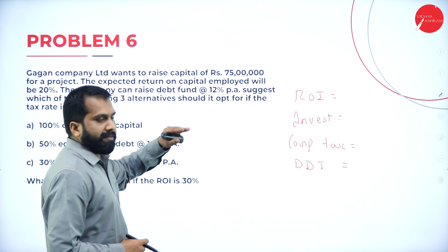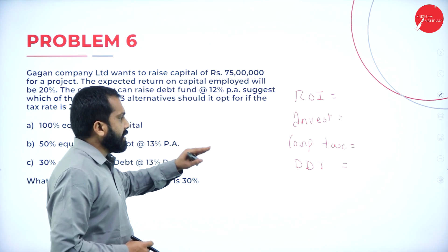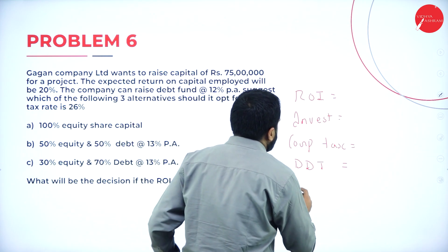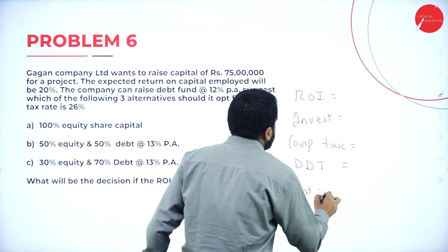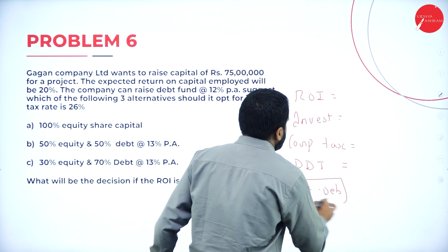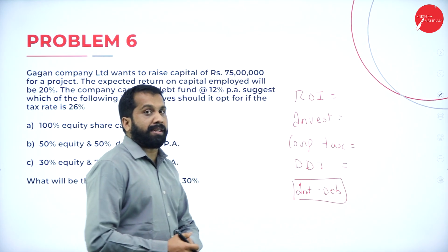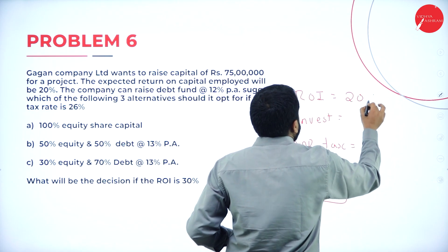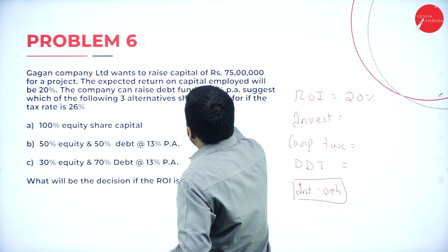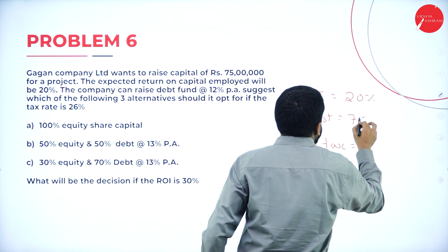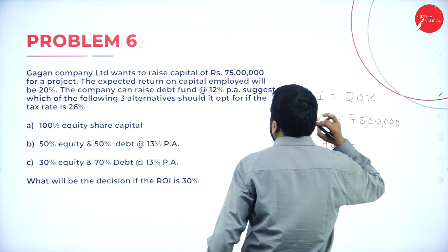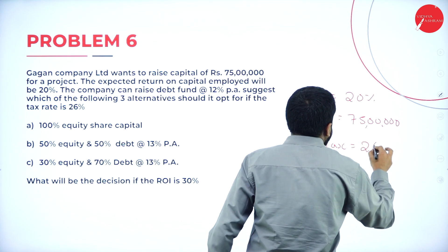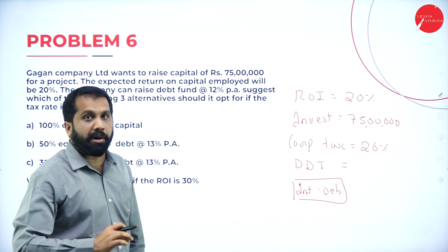Now, return on investment, investment, corporate tax, dividend distribution tax — once these are identified, we have to go for interest on debenture. What is your return on investment? It is 20%. What is our investment? 75 lakh. What is our corporate tax? It is always 26%. Dividend distribution tax is not given.